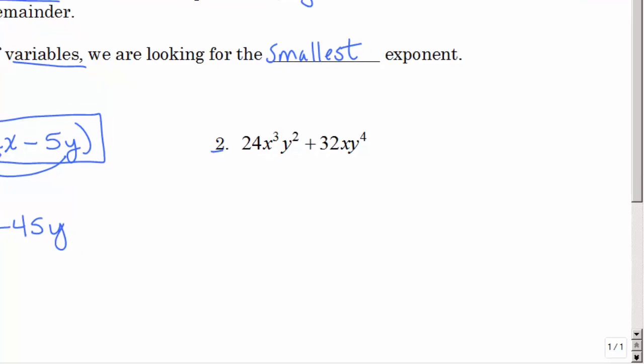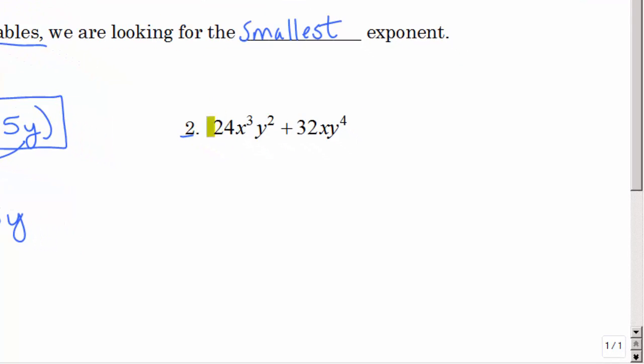Let's look at number 2. The first thing we want to do is look at the numbers and find the largest number that divides 24 and 32. So some of you might say 4. Well, that is a common factor. Something bigger than 4? 8. So I know 8 goes into 24 and 32.